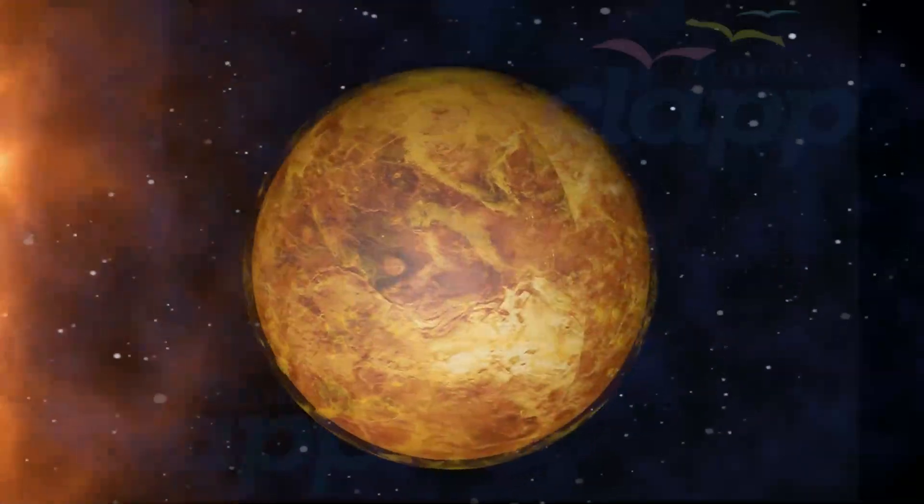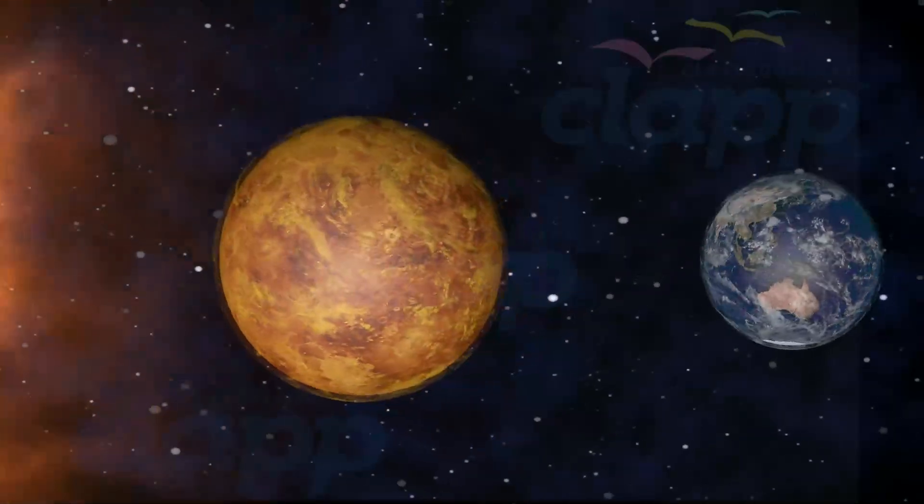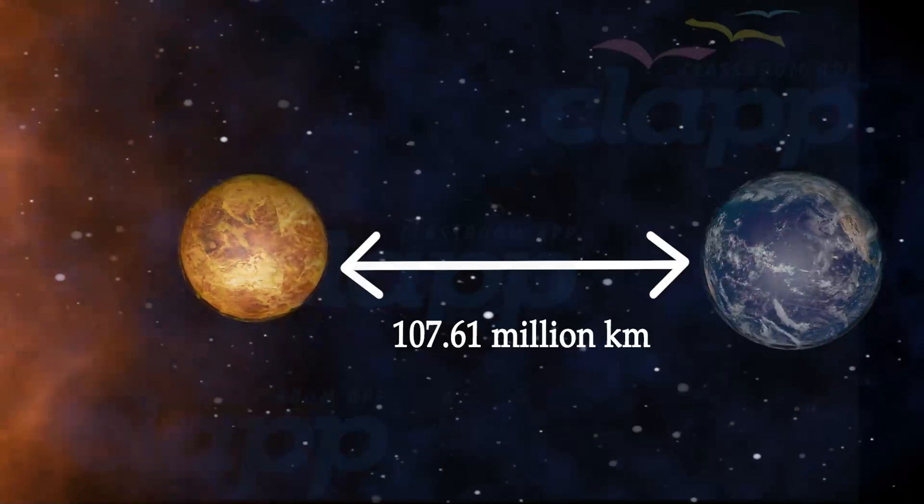Venus is named after the Roman goddess of love and beauty. Venus is 107.61 million km away from Earth.